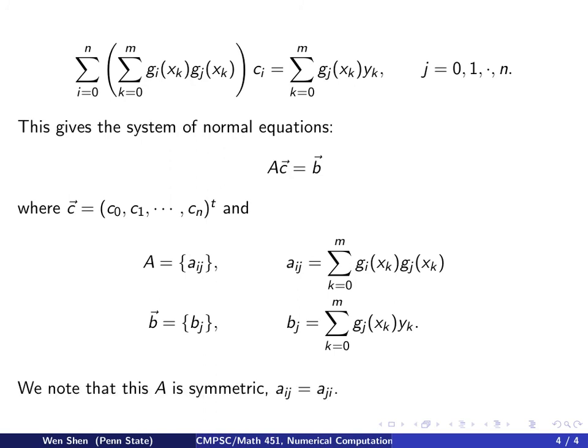In the end, we have a system Ac = b to solve. We also notice that the A matrix is symmetric because a_ij simply equals a_ji. If you switch i with j, this product gives the same thing.